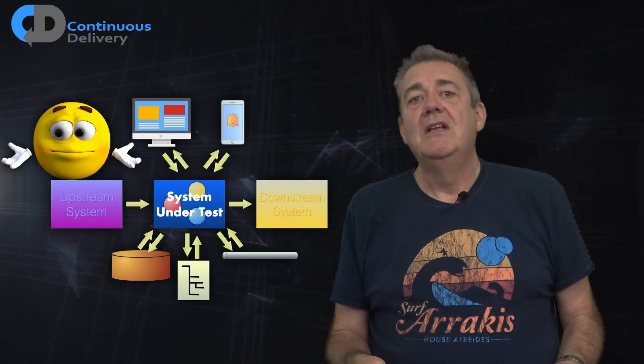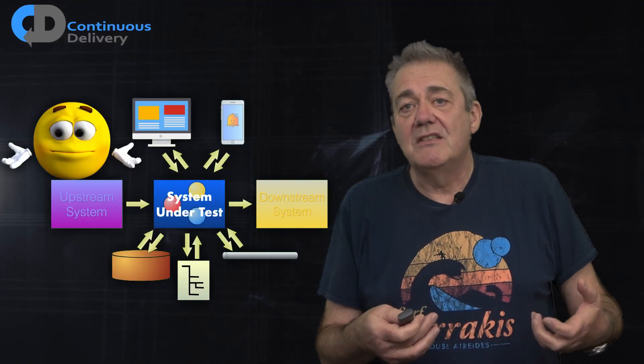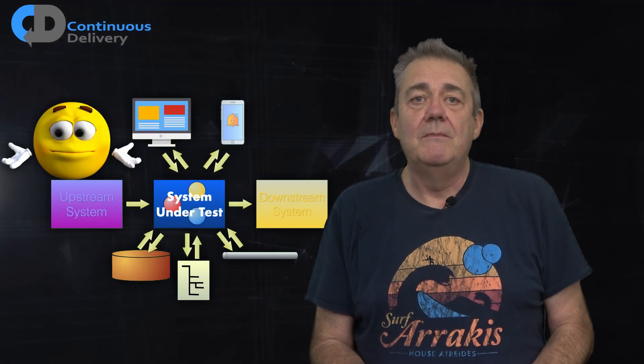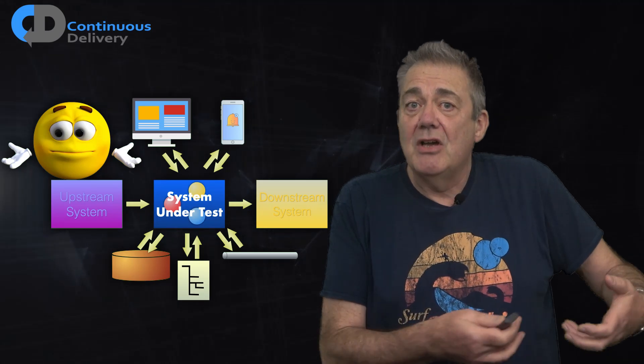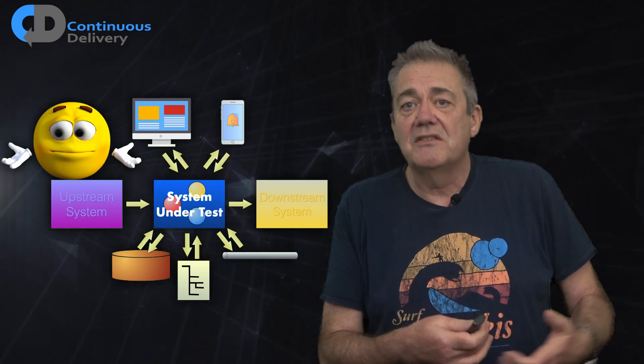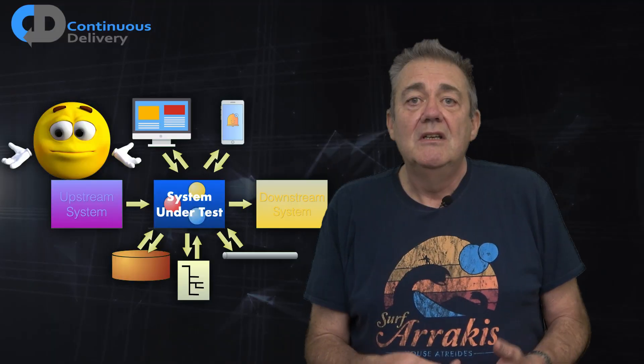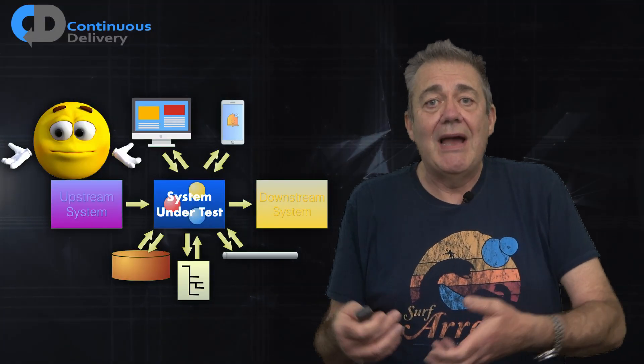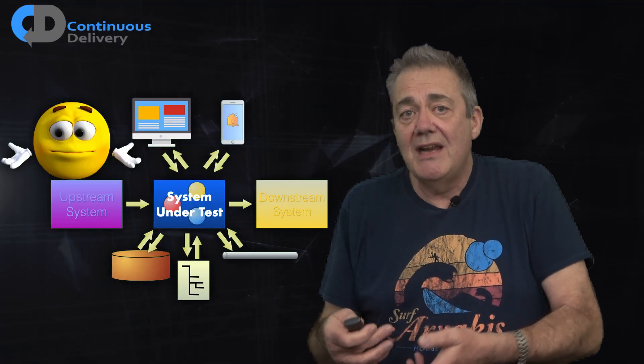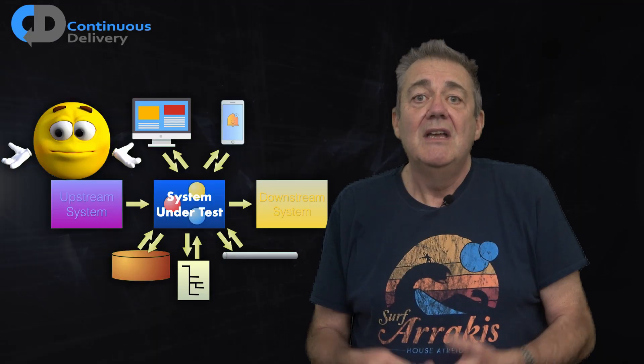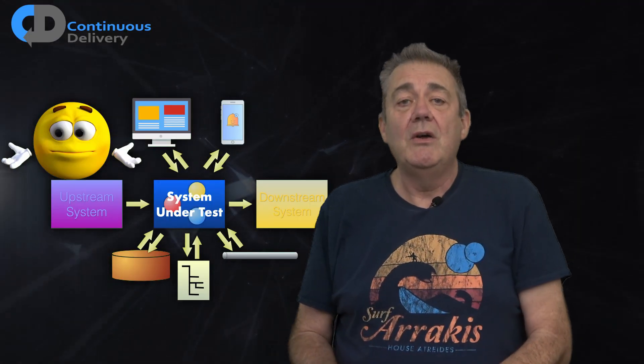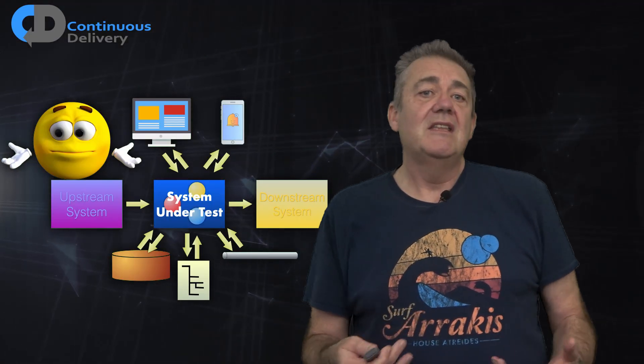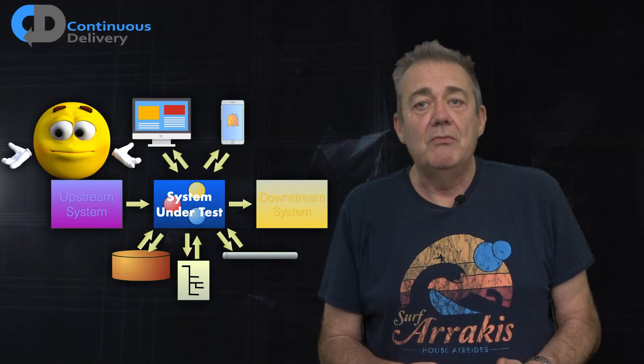For example, if we have an upstream system that's plugged into our system, how can we test our code to see what happens when the upstream system starts to send us garbage? Similarly, how can we test how our code responds if we can't connect to a downstream system if we are already connected to a real one?